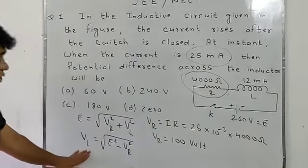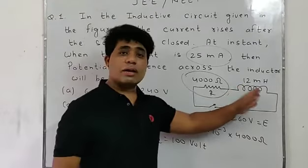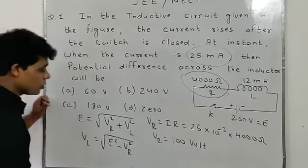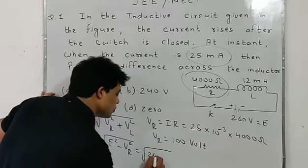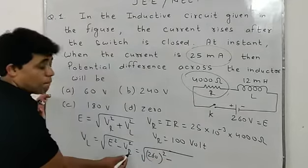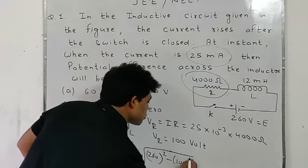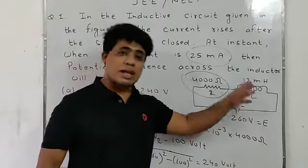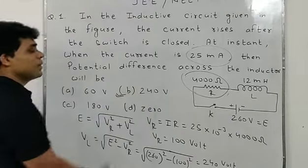Total EMF is 260 volt, VR is 100 volt. Using the formula: VL = √(260² − 100²) = √(67600 − 10000) = √57600 = 240 volt. So the potential difference across inductor L is 240 volt. Option B is the correct answer.